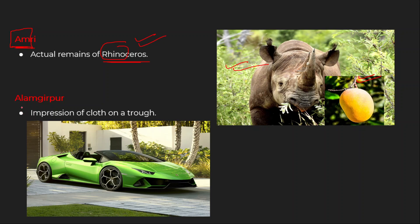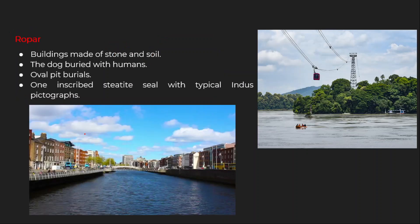Coming to Alamgirpur. 'Alam' — 'Lamgir' — Lamborghini. You can see this Lamborghini. The finding here is the impression of cloth on a trough. When you clean this Lamborghini every morning, you use a very neat cloth with impressions on it — a special cloth for cleaning your Lamborghini. So: impression of cloth on a trough is associated with Alamgirpur.